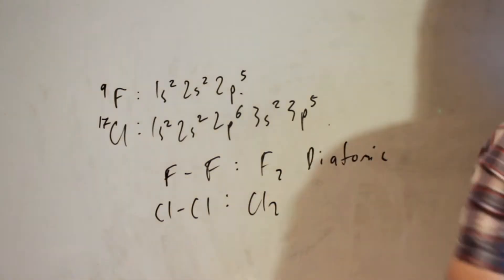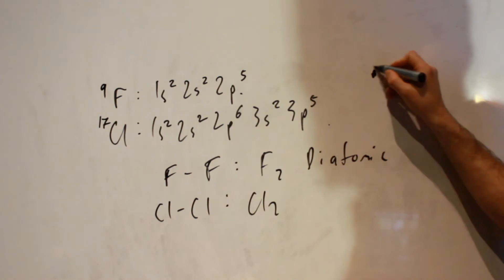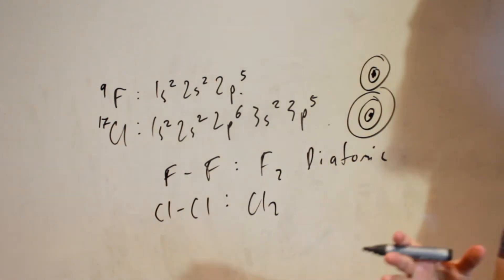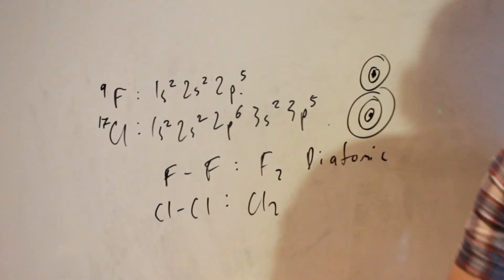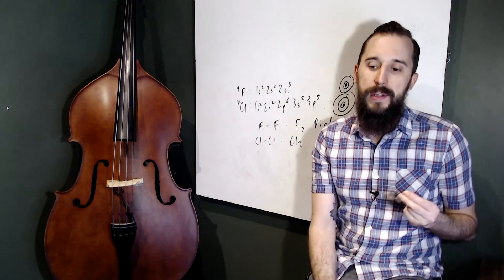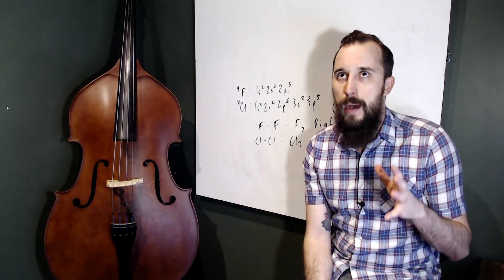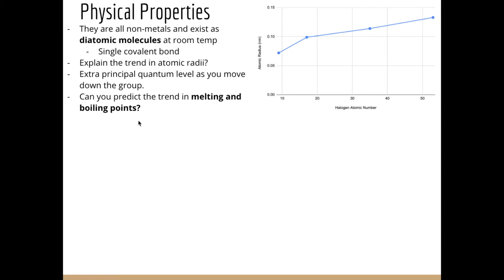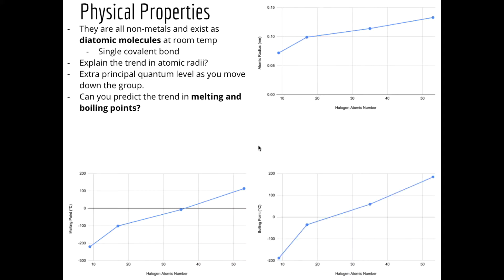Let's now look at melting points and boiling points — have a think about what trend you'd expect going down the group. What we see is a general increase in both melting and boiling points as we go down the group. We can rationalize this based on intermolecular forces. Covalent bonds are very strong, but the bonds between molecules — the intermolecular forces — are generally much weaker.